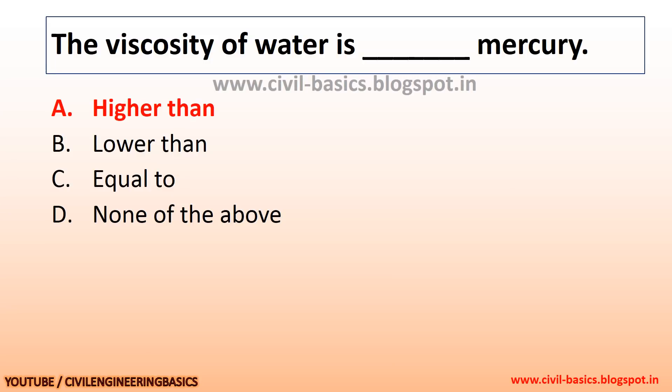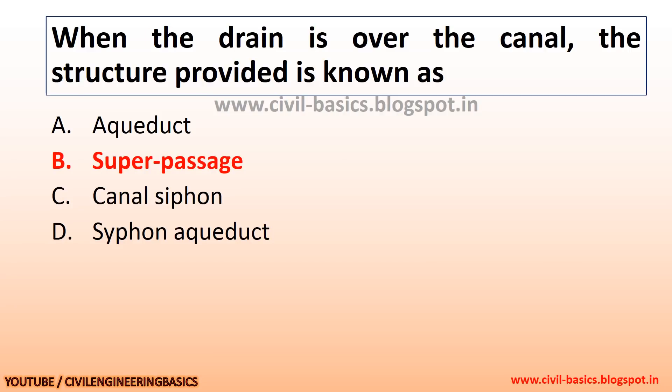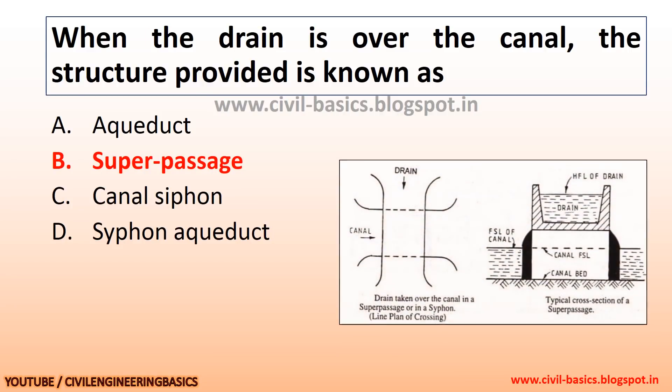The viscosity of water is higher than mercury. When the drain is over the canal, the structure provided is known as a super passage.